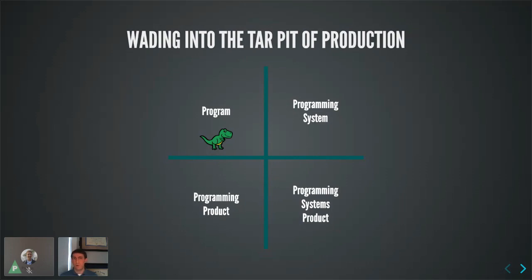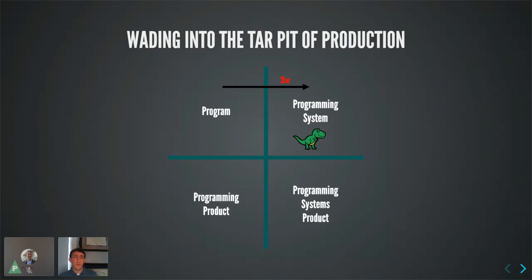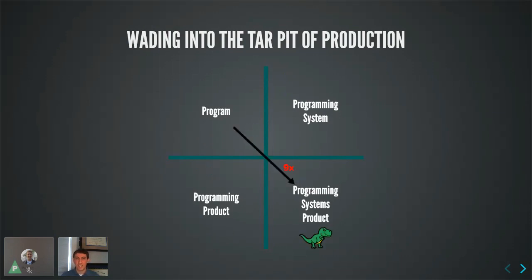In the upper left quadrant is just a program — what you crank out over the weekend with six two-liter bottles of Code Red. But if you want to develop that into a production application, you move to the right: you become a programming system, integrating with databases, clinical registries — that's three times as much work. Then to make it a programming product, you test, generalize, and document your code — another 3x increase.